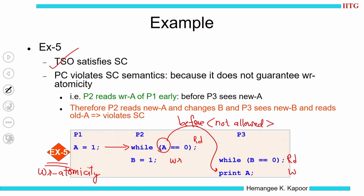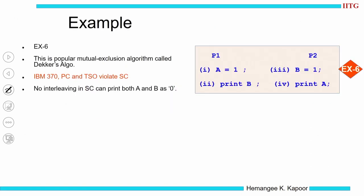Only Processor Consistency — the third variant — will violate sequential consistency because it says you can read others' write early. When I can read others' write early, P2 is going to read the value of P1 earlier even before P3 has seen the new value of A. So before P3 sees A, P2 reads A and proceeds, P2 reads new A, changes B, and P3 sees the new B but reads the old A value. This happened because of the relaxed write atomicity order.